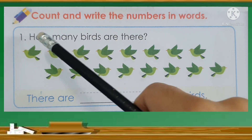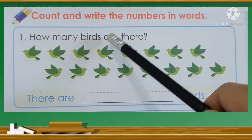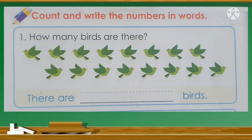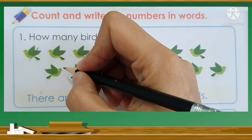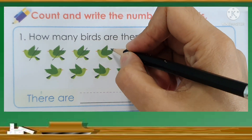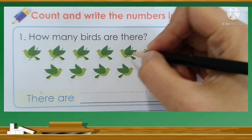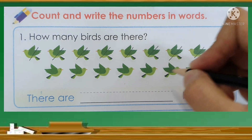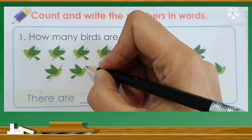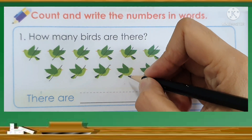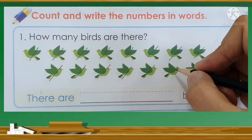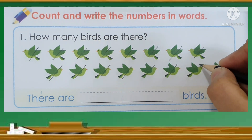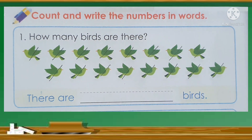Question number 1: How many birds are there? Now let's count how many birds. 1, 2, 3, 4, 5, 6, 7, 8, 9, 10, 11, 12, 13, 14, 15, 16. There are 16 birds.